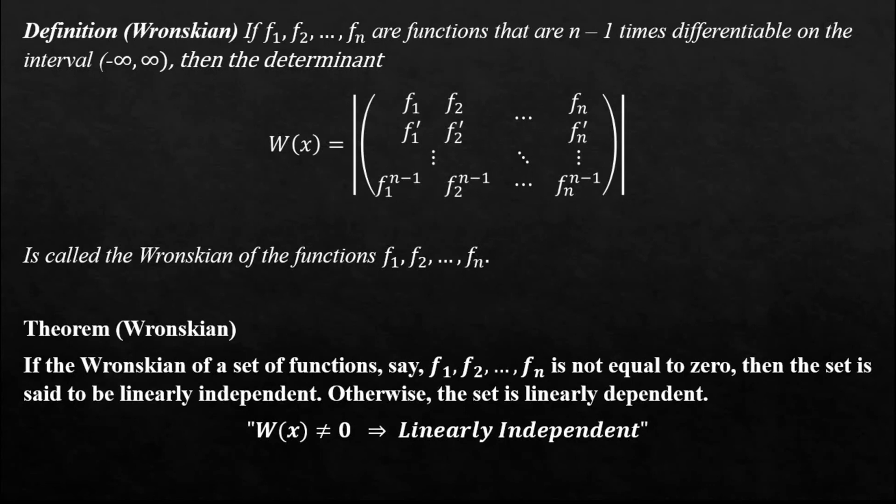The theorem is what we need: if the Wronskian is not equal to zero, then the set is said to be linearly independent. Otherwise, the set is linearly dependent. So, the test for linear dependence or independence for functions can be derived by simply using the Wronskian.